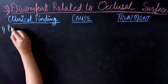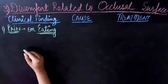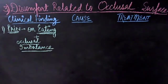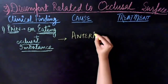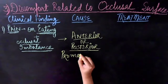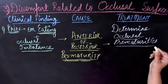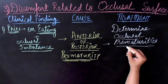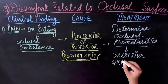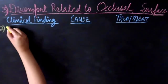Regarding discomfort related to the occlusal surface of the denture: if the patient complains of pain on eating in the presence of occlusal imbalance, this is most probably because of anterior or posterior occlusal prematurity. To treat this, we need to determine the occlusal prematurities and adjust the occlusion by selective grinding.